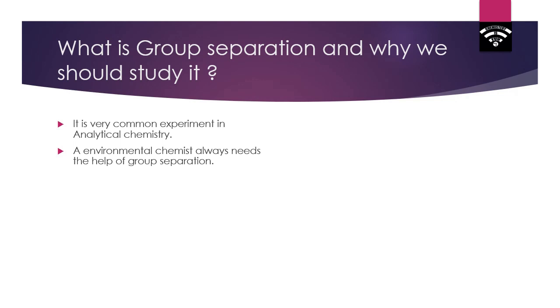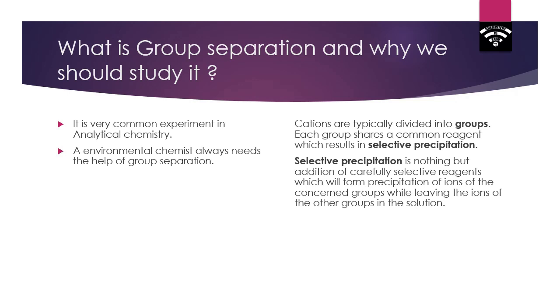So what is group separation? Here we divide most of all cations into five groups and experimentally found some specific reagents which can form precipitations of ions from one group only.